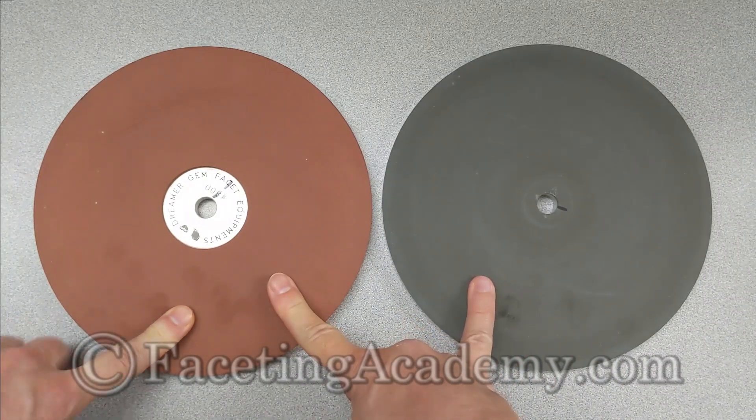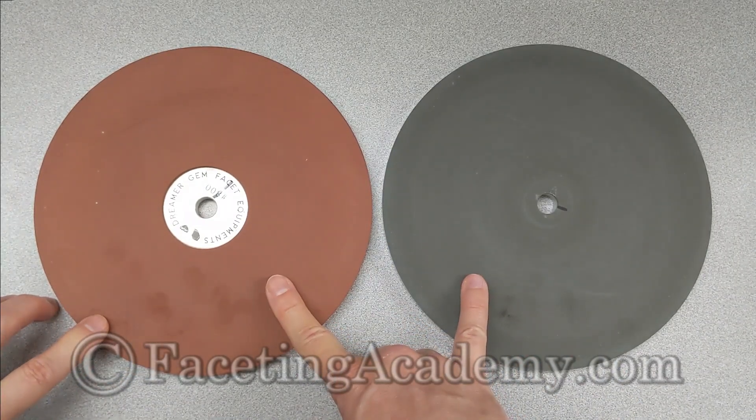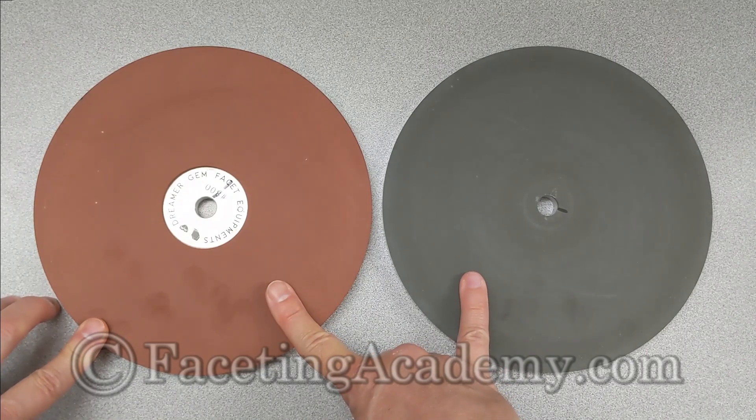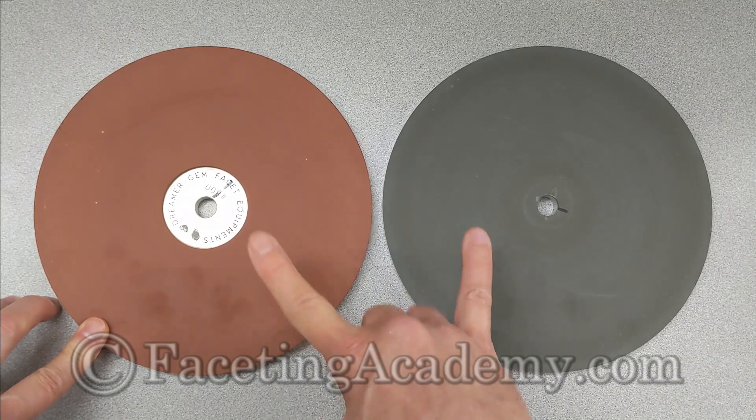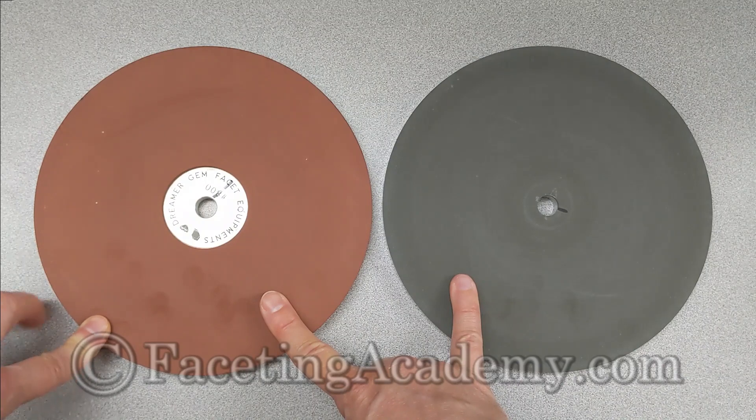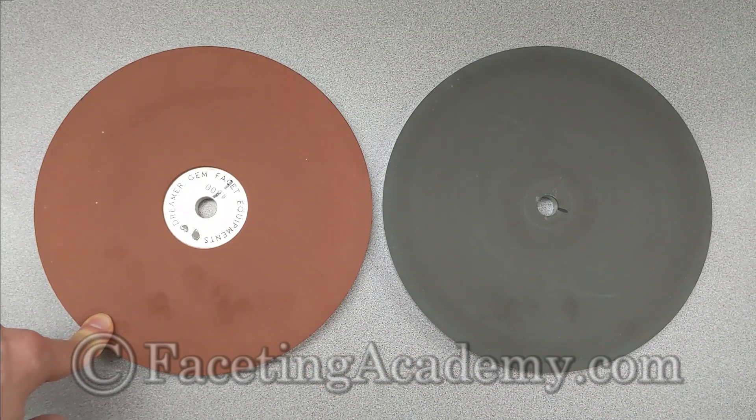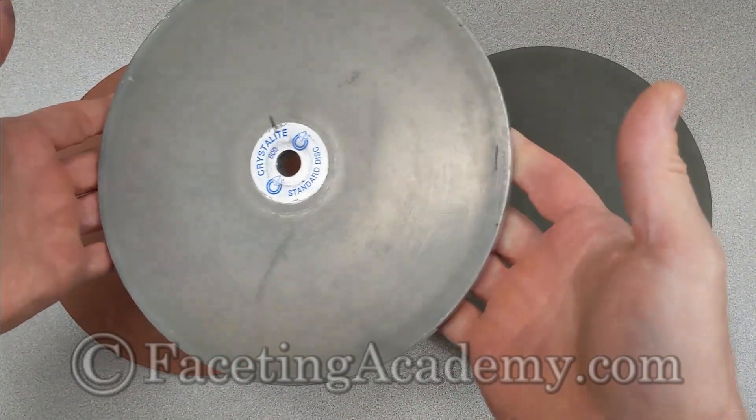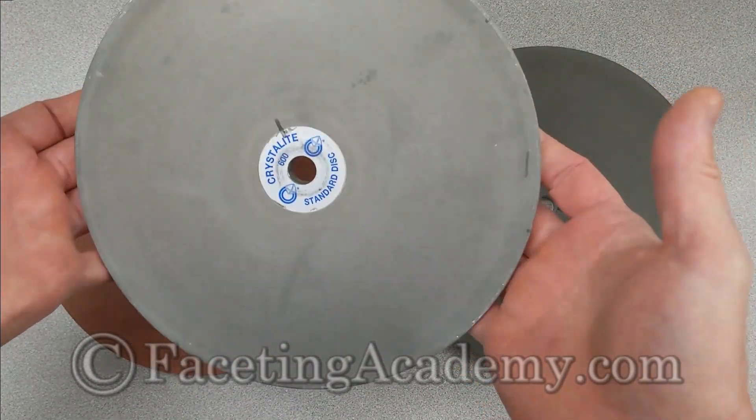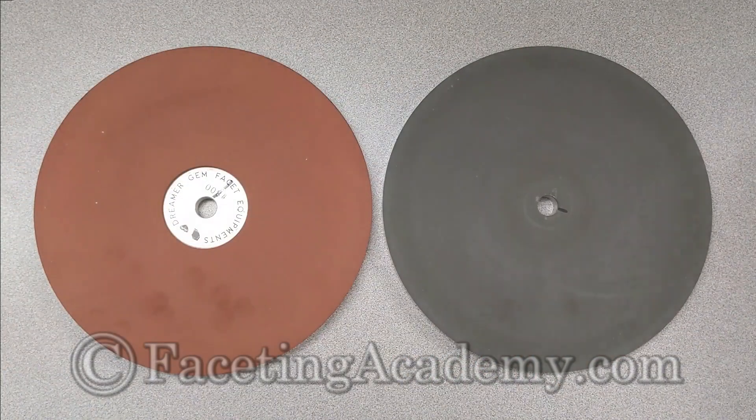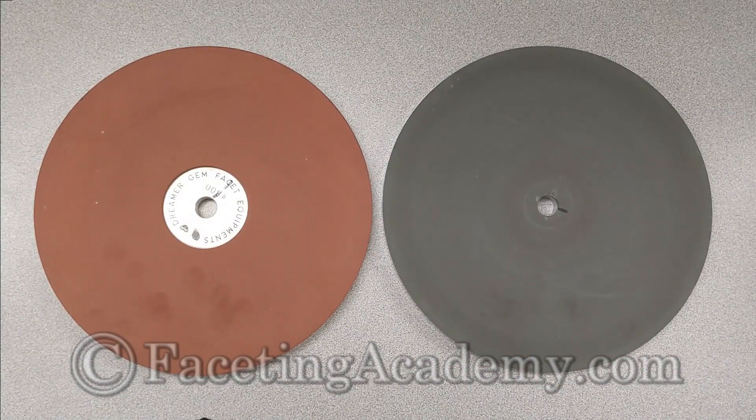Now both of these laps as well as the 3000 versions from both these companies, they did orange peel on a piece of spodumene that we tested them on, but not on any of the other materials including lab Alex and synthetic corundum. Now I don't think that has eliminated the need for a good plated lap like this Crystal Light Standard 600, and that's because there are still some materials that are just going to not like the resin.